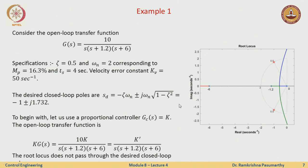Now we know the theory — let us start with a problem directly. We are given a plant G(s) = 10 / [s(s+1.2)(s+6)]. The desired specifications are damping coefficient ζ = 0.5 and ωn = 2, which corresponds to a peak overshoot of 16.3 percent and a settling time of 4 seconds. In addition, the velocity error constant kV should be 50.